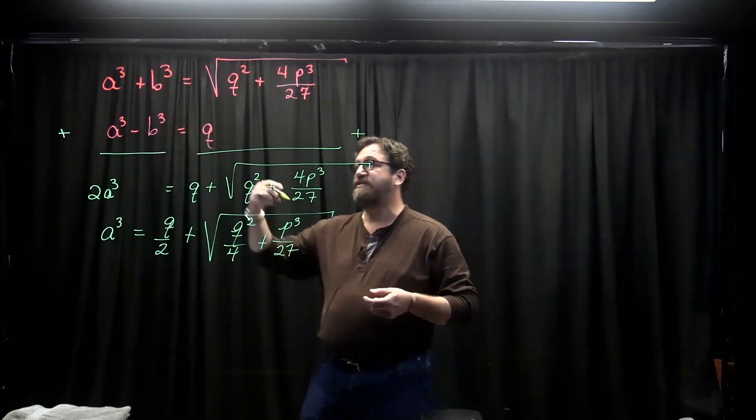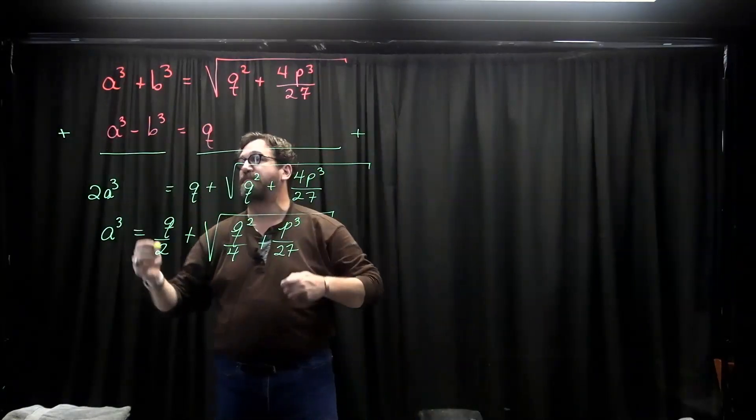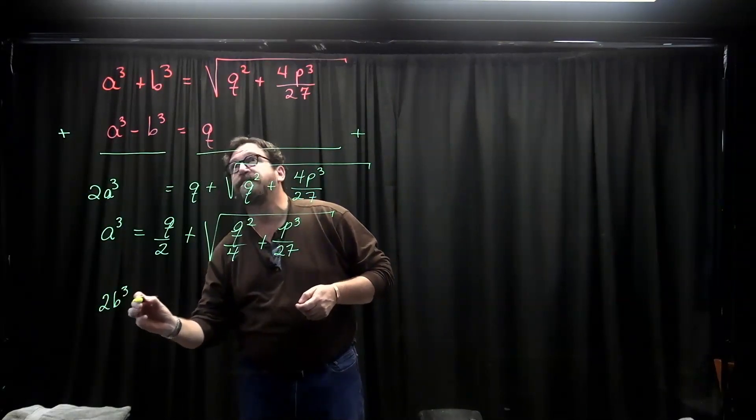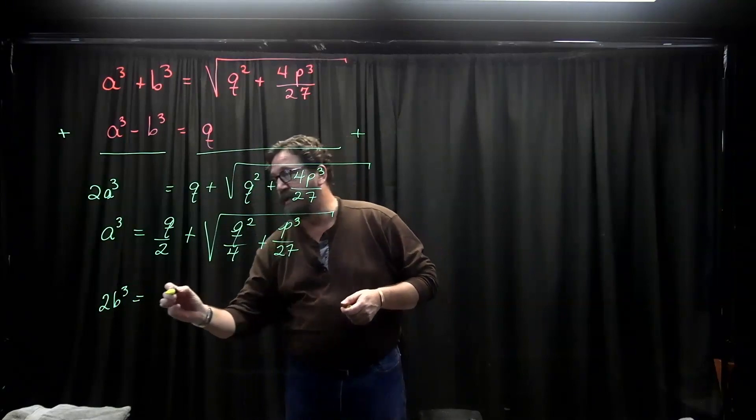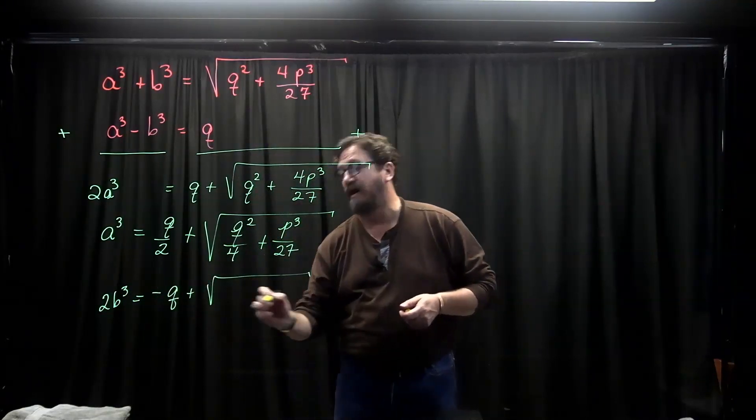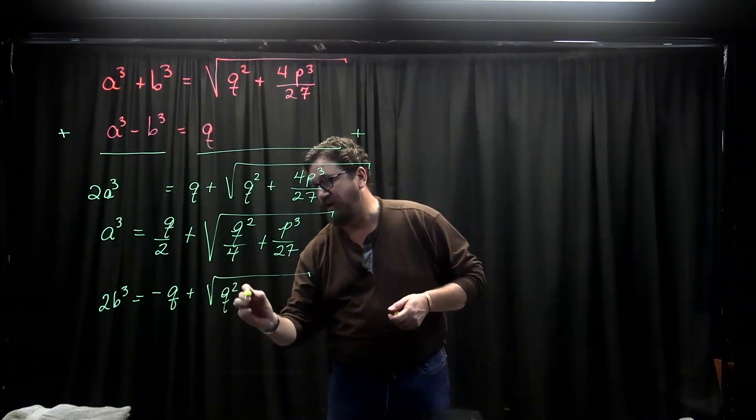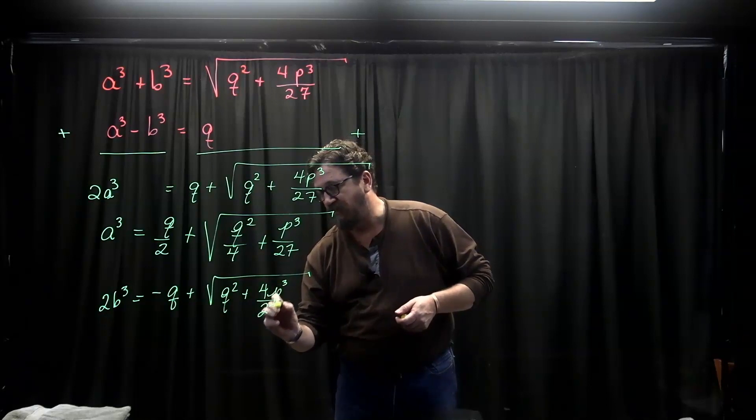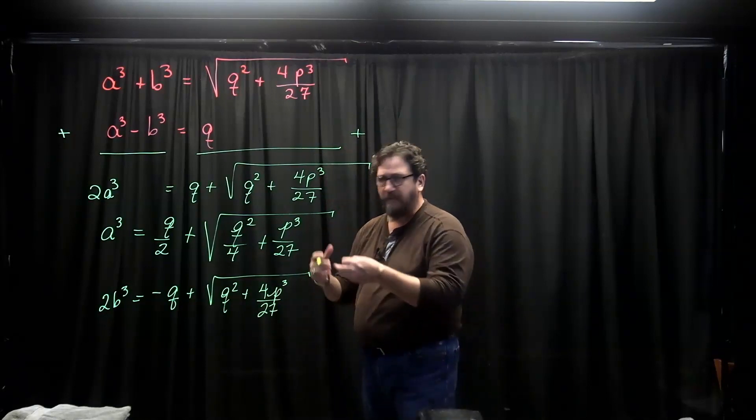Now, if I subtract the two equations from each other, I'm going to get 2b cubed is equal to minus q plus the square root of q squared plus 4p cubed over 27.